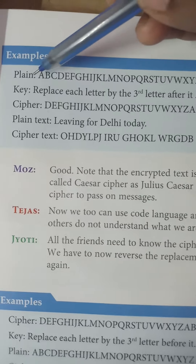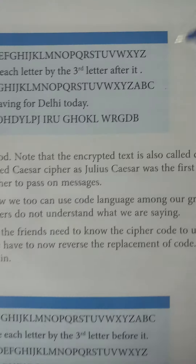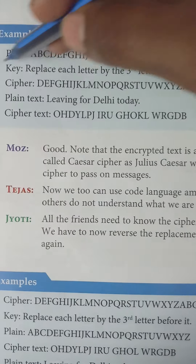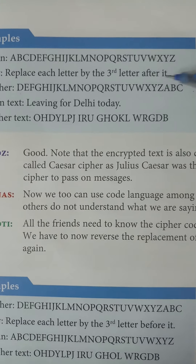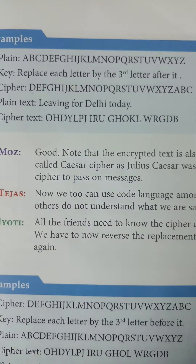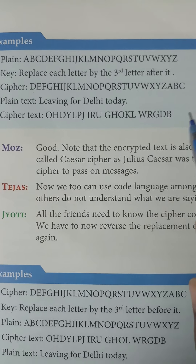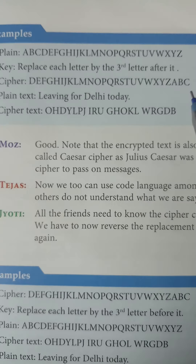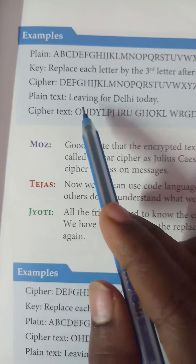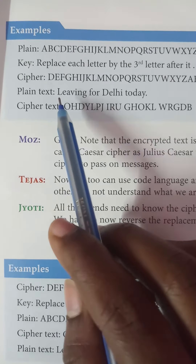Let us take an example. I want to pass on a message: 'Leaving for Dalgi today' to you. Moose is sending a message to Jody, and the message is: 'Leaving for Dalgi today.' Now let us modify this using some code so that others cannot understand the message. Moose is not sending the message directly — he is using a code so it cannot be understood by a third person.